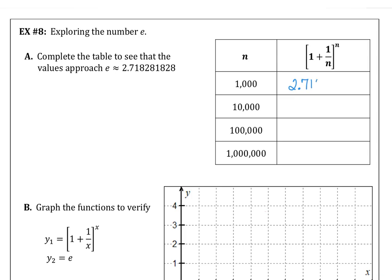When n is 1,000, we have 2.71692393. At 10,000, 2.71814592. At 100,000, 2.718268237. At 1,000,000, 2.718280469, you can see that growth there.